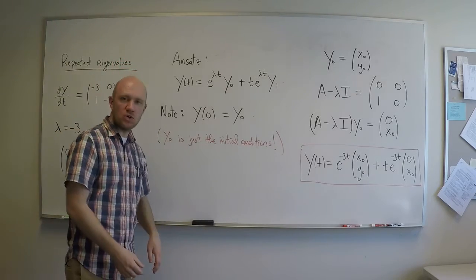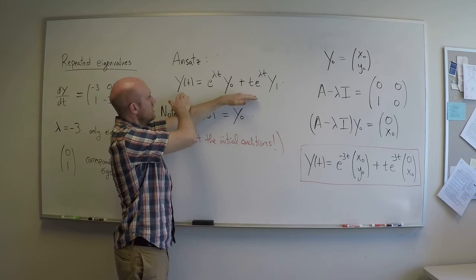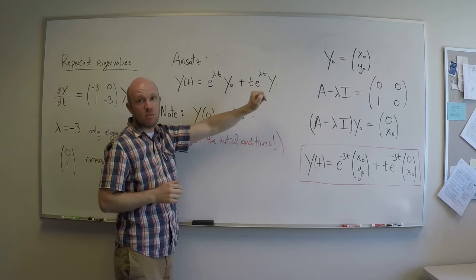So now we can actually return to the example and finish it off. So I'll remind you now, the ansatz is y(t) = e^(λt)y0 + t*e^(λt)y1.